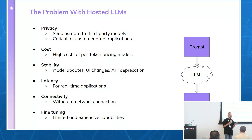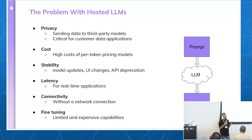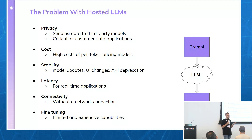About stability: sometimes companies like OpenAI close old APIs like Davinci, and if we build a product on top of those models, the API can one day just disappear. Because we need to send each prompt over the internet, we have latency problems for real-time applications, or connectivity issues if running on the edge without internet. And finally, there's the fine-tuning issue — fine-tuning hosted LLMs can be very problematic and the cost could be very high.